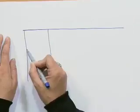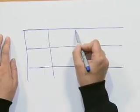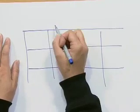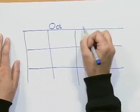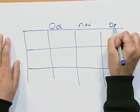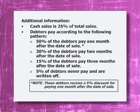The debtors collection schedule is for October, November, and December. The reason previous months' total sales — July, August, and September — have also been given is that a portion of what was sold previously could be collected during the October to December period.